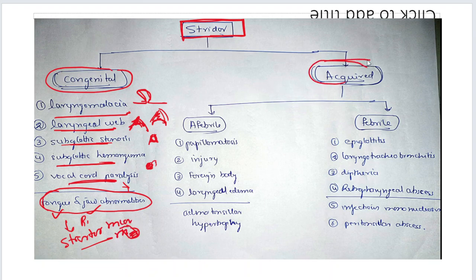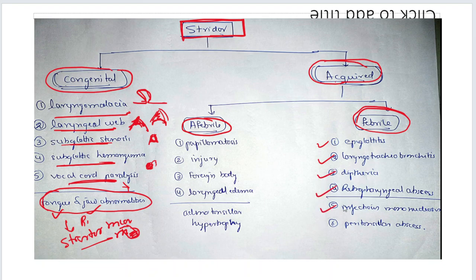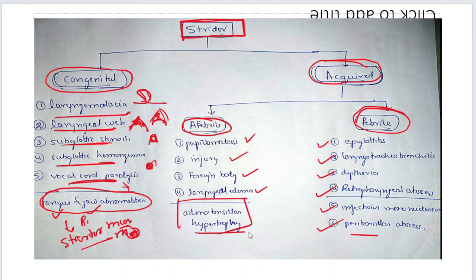Acquired causes of Strider can be divided into febrile and afebrile causes — this is an easy way to differentiate them. Febrile causes: acute epiglottitis, acute laryngotracheobronchitis, diphtheria, retropharyngeal abscess, infectious mononucleosis, and peritonsillar abscess when they involve the larynx. Afebrile causes: juvenile multiple papillomatosis, injury, foreign body, laryngeal edema because of burns. Adenoid hypertrophy mostly causes stertor but is included in some textbooks.